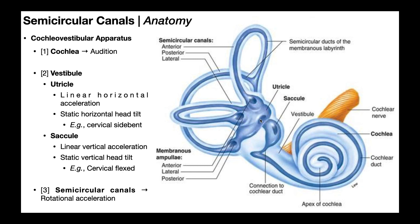The utricle is closest to the semicircular canals. The utricle is involved in the sensation of linear horizontal acceleration — for example, when you're accelerating on one of those moving sidewalks at the airport. And also static horizontal head tilt: if you're holding your head side-bent to one direction, it would help you know where your head is in space.